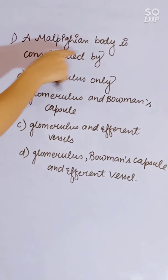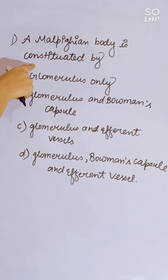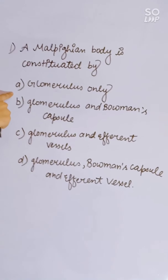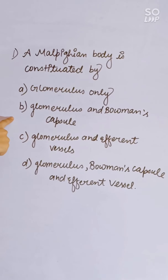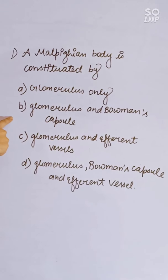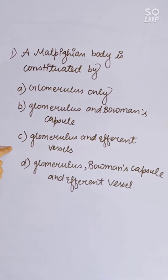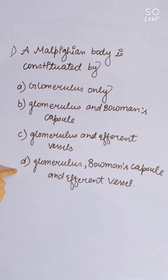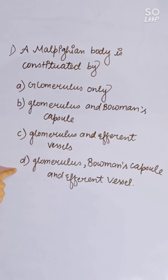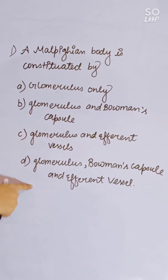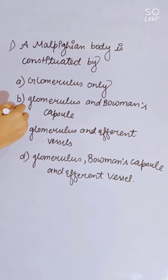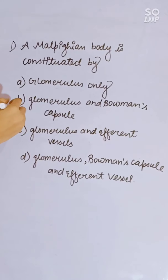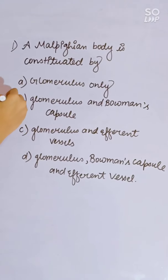A Malpighian body is constituted by: glomerulus only; glomerulus and Bowman's capsule; glomerulus and efferent vessels; or glomerulus, Bowman's capsule and efferent vessels. Correct answer is B — glomerulus and Bowman's capsule.